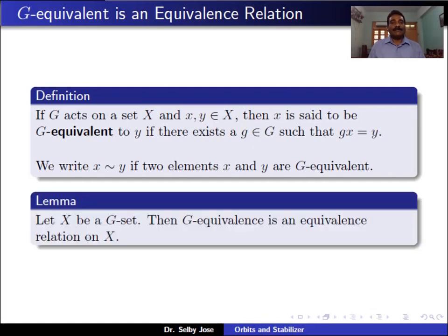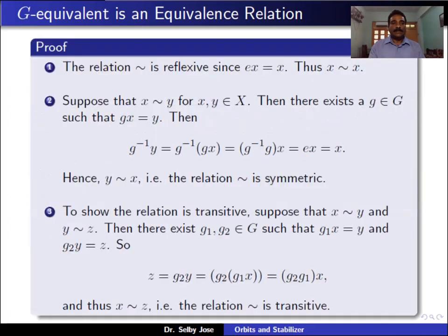We show that this relation is an equivalence relation on X. To show it is an equivalence relation, we need to show that it is reflexive, symmetric, and transitive. Reflexive means x is related to x itself. By the first property of group action, e*x equals x, that is star of e comma x equals x for all x. So for any particular x, we obtain an element e in G such that e*x equals x. Therefore by definition, x is related to x. So this relation is reflexive.